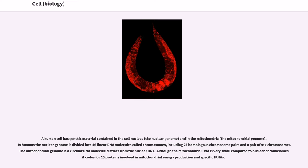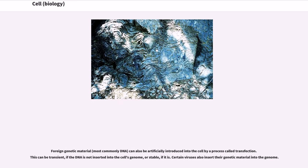A human cell has genetic material contained in the cell nucleus, the nuclear genome, and in the mitochondria, the mitochondrial genome. In humans the nuclear genome is divided into 46 linear DNA molecules called chromosomes, including 22 homologous chromosome pairs and a pair of sex chromosomes. The mitochondrial genome is a circular DNA molecule distinct from the nuclear DNA. Although the mitochondrial DNA is very small compared to nuclear chromosomes, it codes for 13 proteins involved in mitochondrial energy production and specific tRNAs.